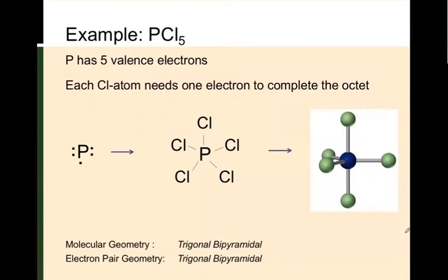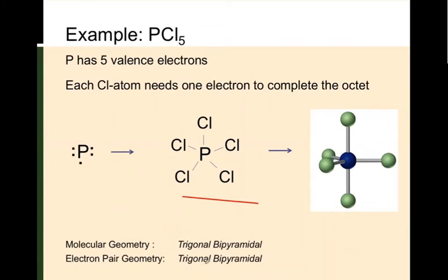An example is PCl5. Phosphorus has five valence electrons and can share all five to form five bonds to chlorine. The Lewis structure shows five bonds and five electron domains. With five bond pairs and no lone pairs, the electron domain geometry equals the molecular geometry — both are trigonal bipyramidal.